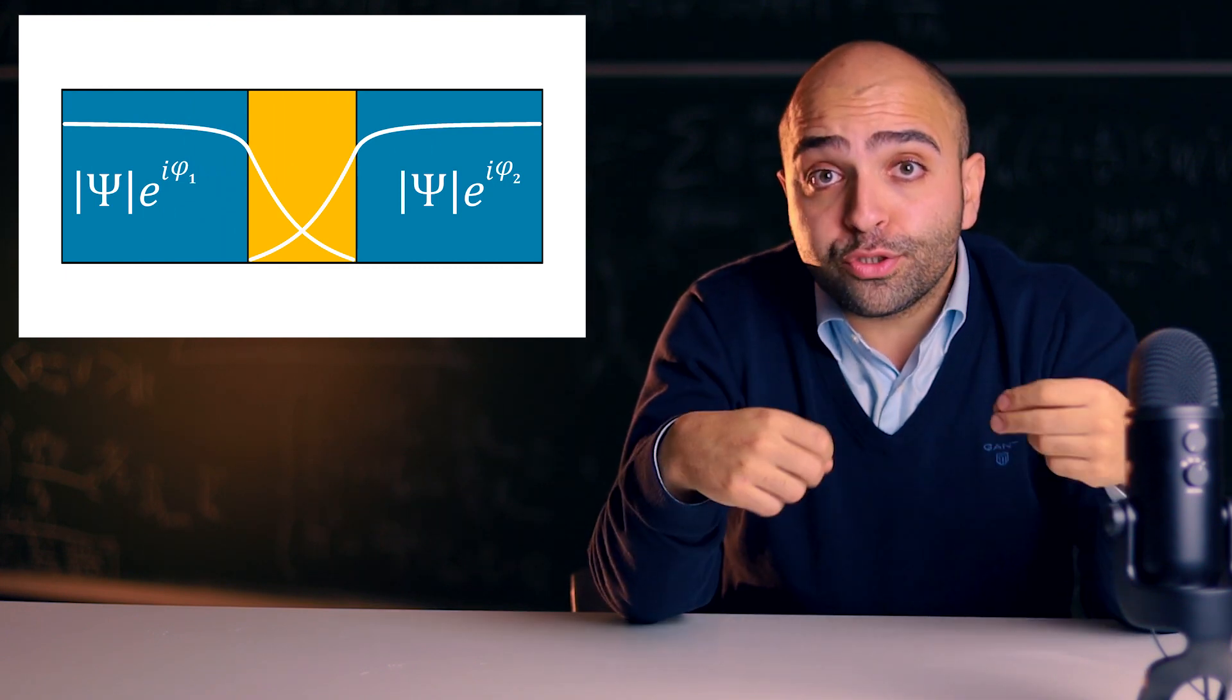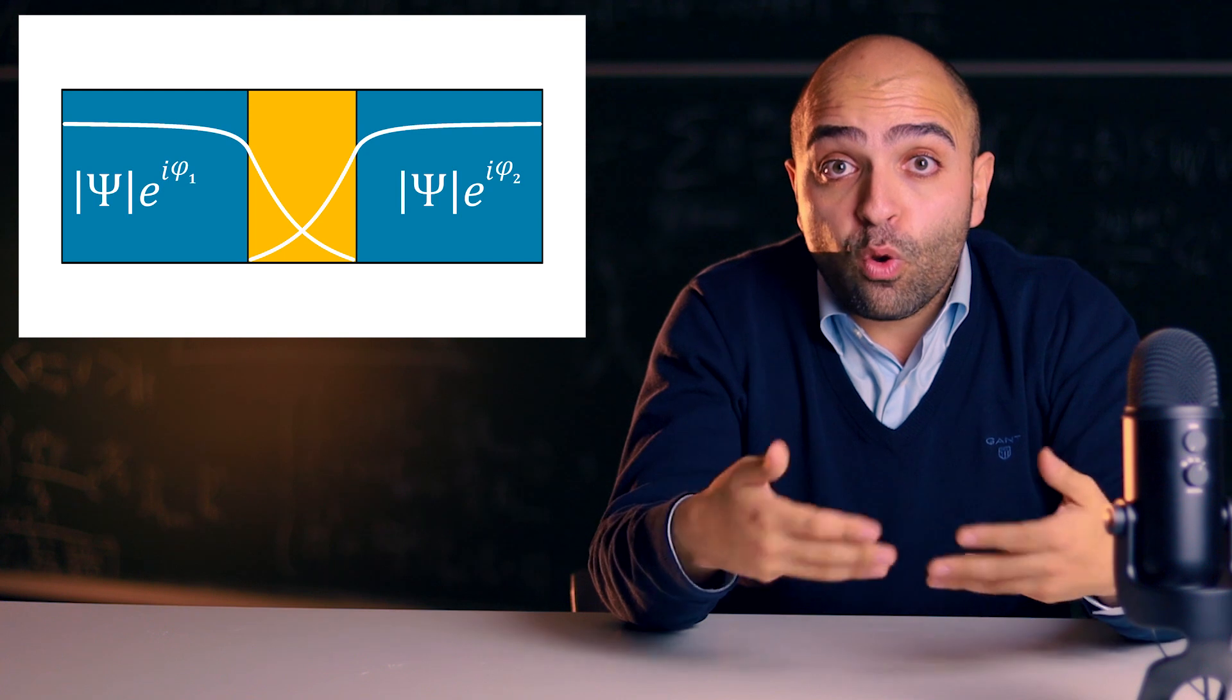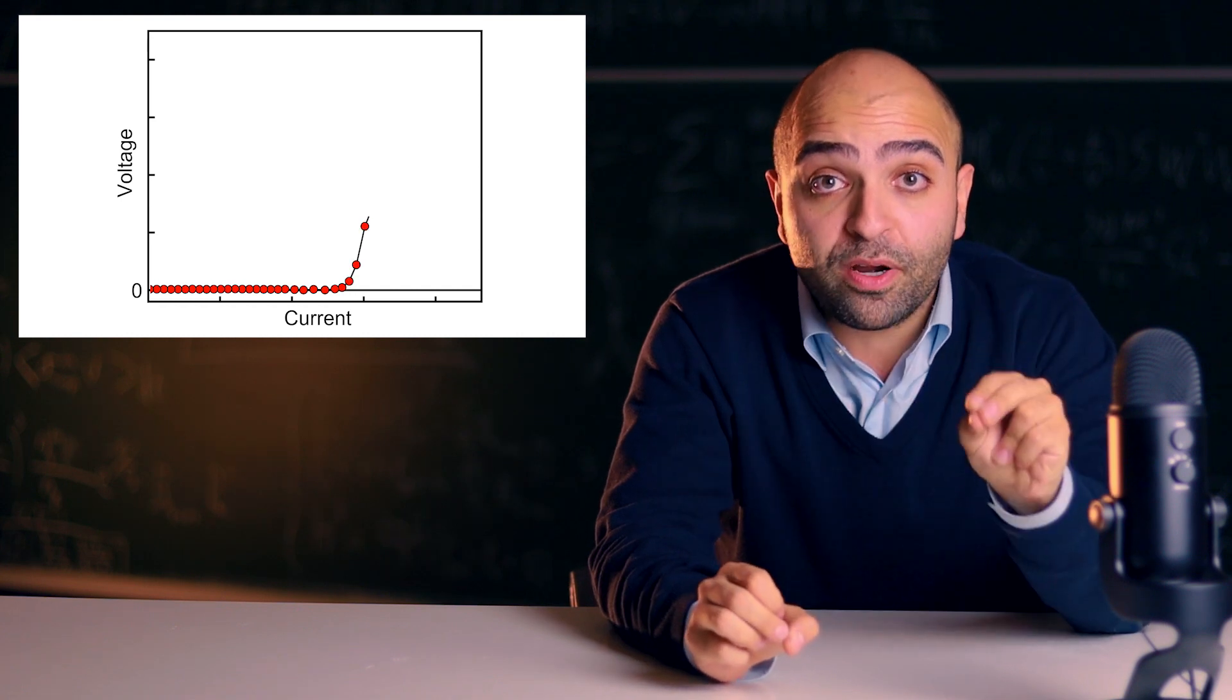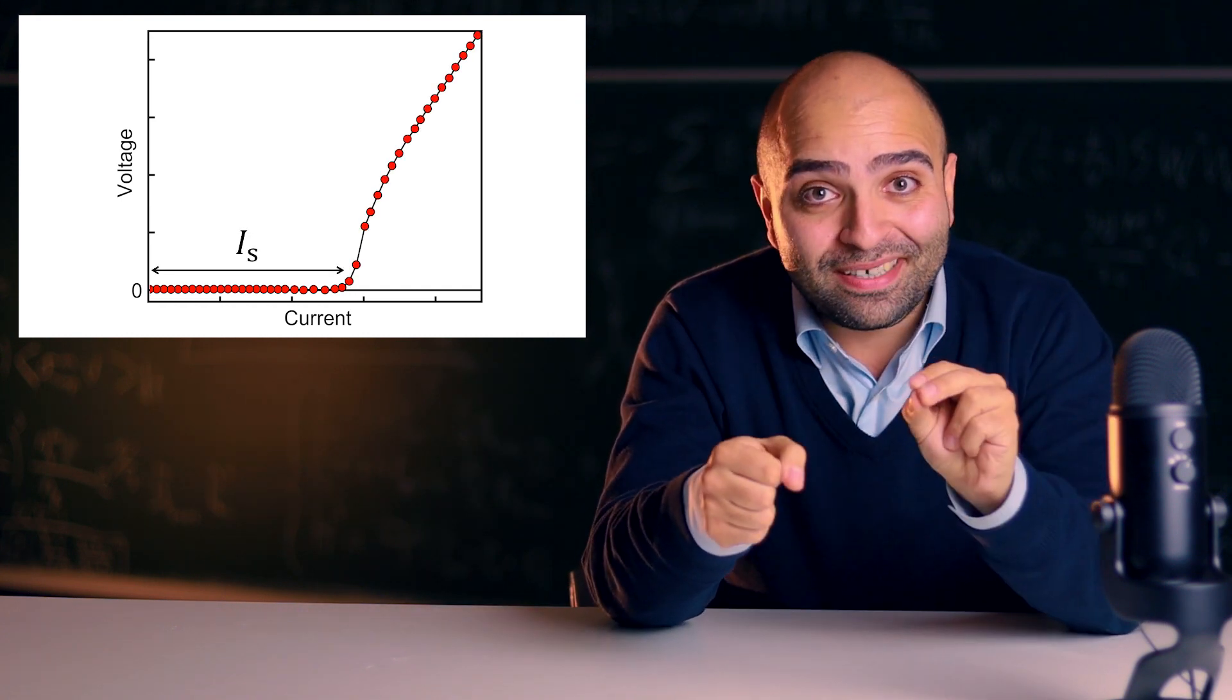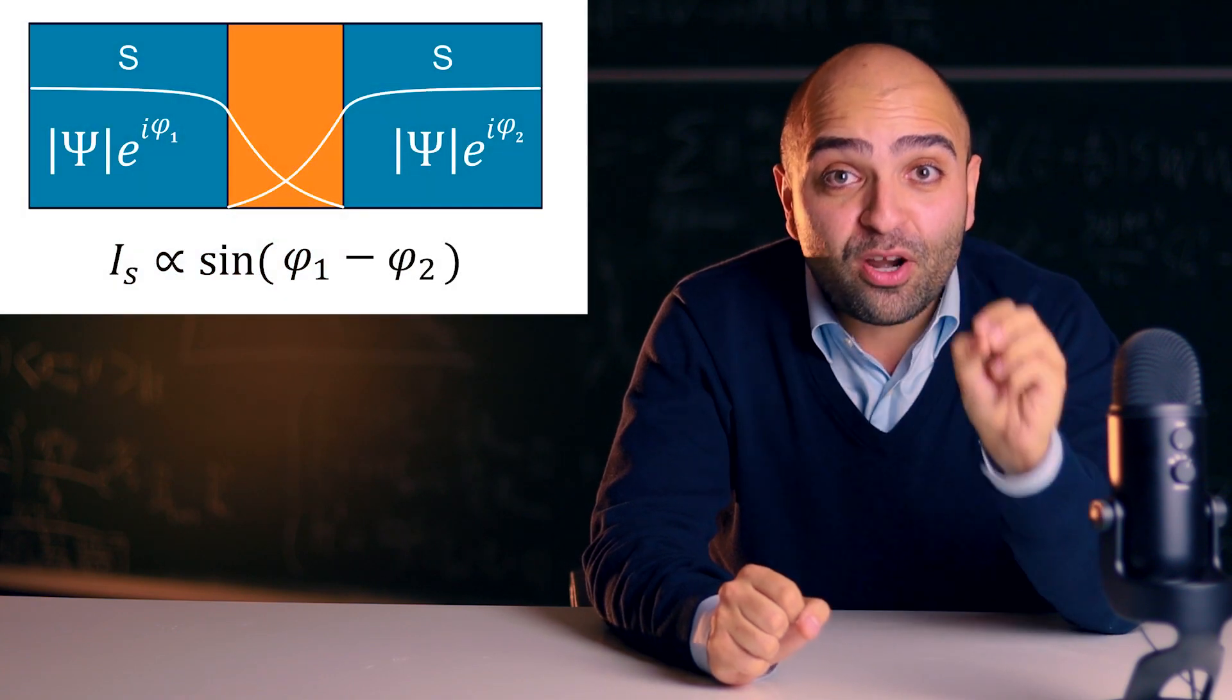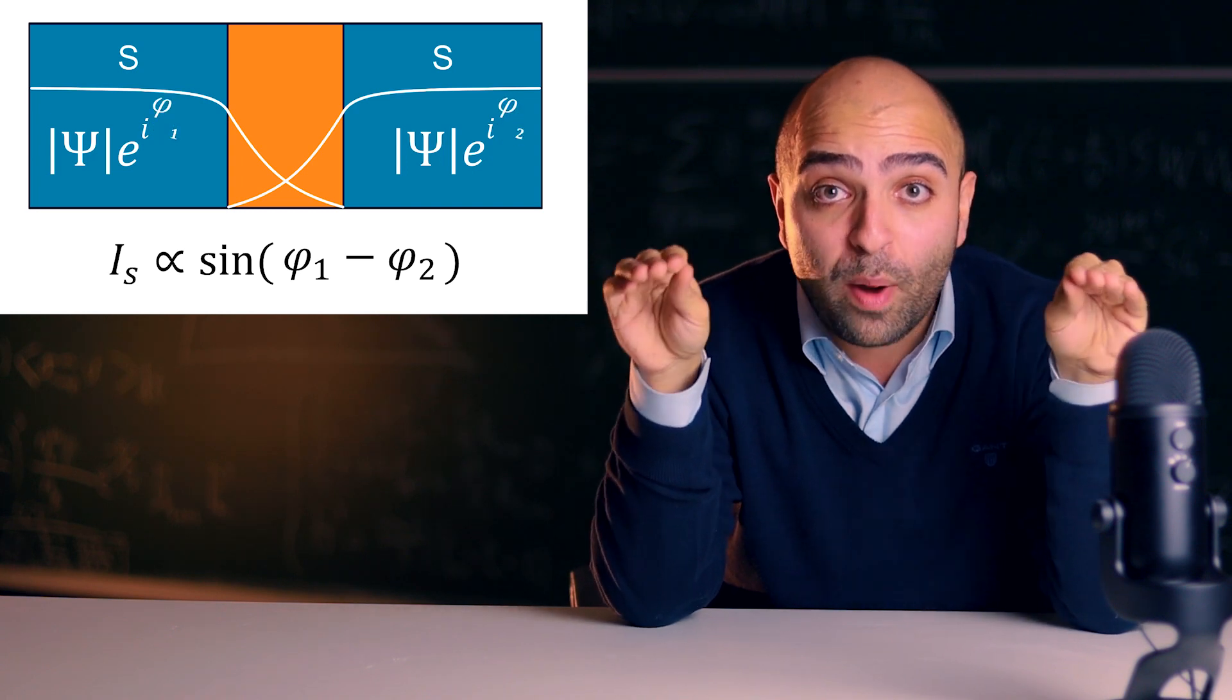You could also think of this as two reservoirs of Cooper pairs which leak into the weak link and make it also superconducting. As a consequence, now you can pass a finite amount of supercurrent through your Josephson Junction. But this supercurrent is not driven by a voltage like in conventional electronics.